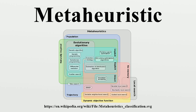In computer science and mathematical optimization, a meta-heuristic is a higher-level procedure or heuristic designed to find, generate, or select a heuristic that may provide a sufficiently good solution to an optimization problem, especially with incomplete or imperfect information or limited computation capacity. Meta-heuristics sample a set of solutions which is too large to be completely sampled.